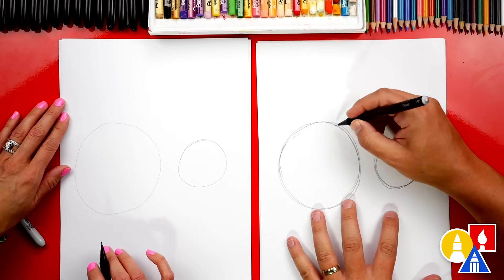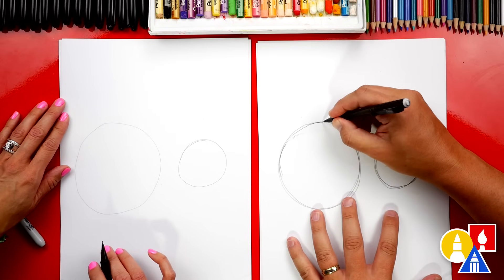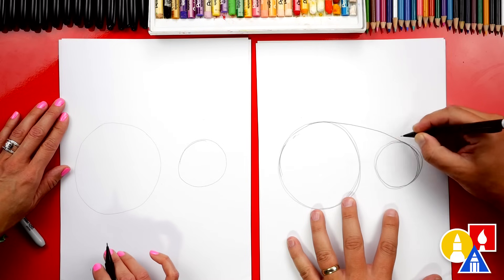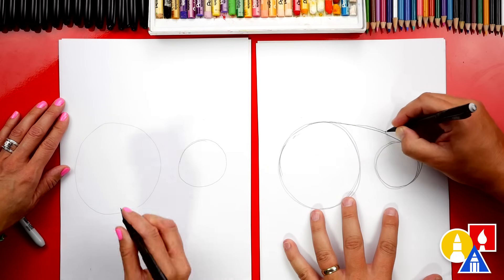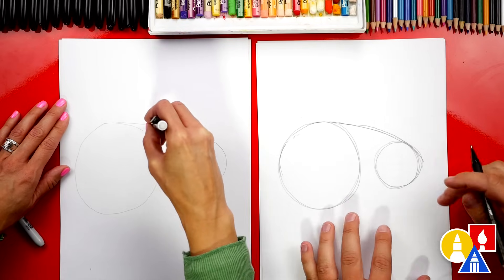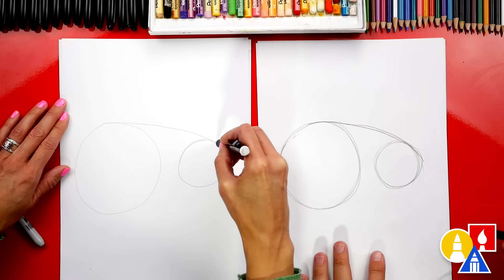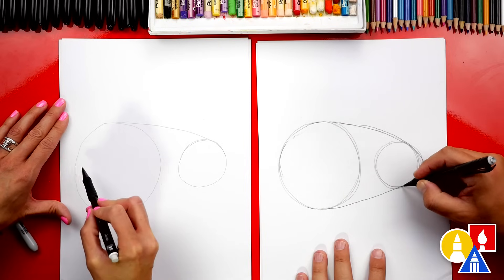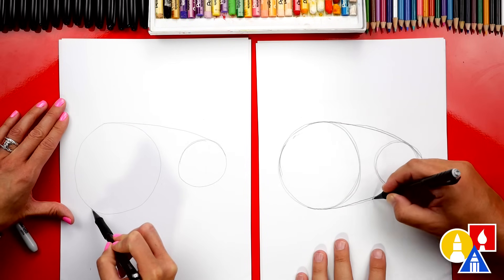Next, let's connect these two circles together. Up here at the top, we're gonna draw a curve, not a straight line but a curve. Draw a curve that connects to the top of the smaller circle. Yeah. And then let's do the same thing on the bottom. Draw another curve that connects to the bottom.